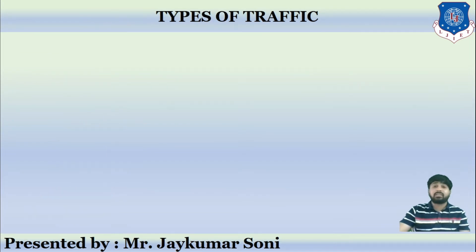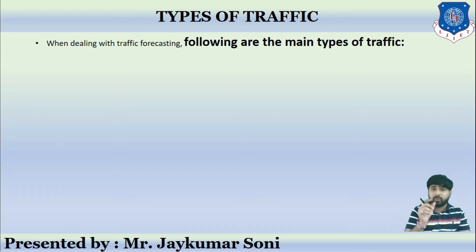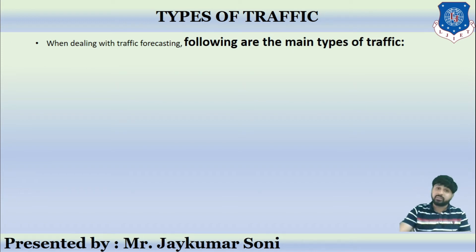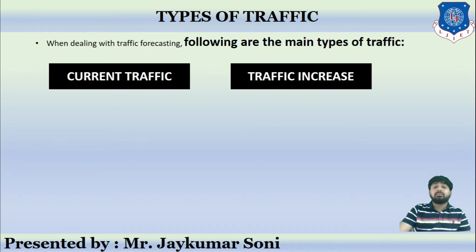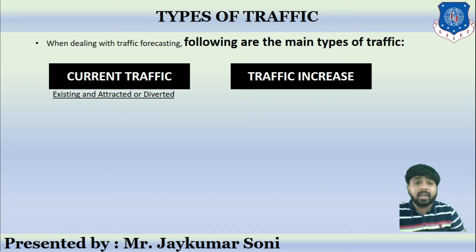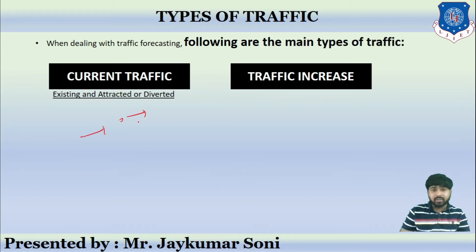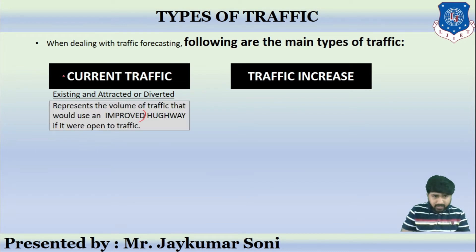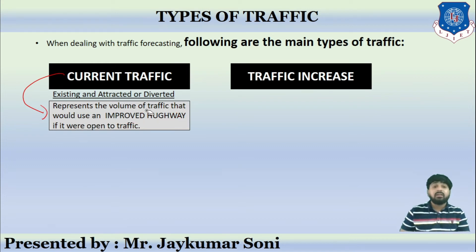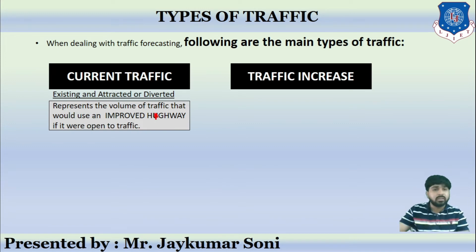Let us learn about the various types of traffic. When dealing with traffic forecasting, it is necessary to know exactly which kinds of traffic exist. The first is called current traffic and the second is called traffic increase. Current traffic is majorly focused towards existing and attracted or diverted traffic. It represents the volume of traffic that would use the improved highway if it were open to traffic — the probable scenario if the road or highway were of improved capacity.